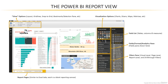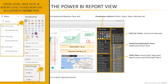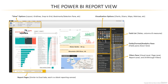Now the last thing to note here is the filters pane, which includes four different types of filters: visual level, page level, report level, and drill through. We're going to talk about those and practice them in a later lecture. But for now, just remember that those impact the specific scope of data that gets filtered.